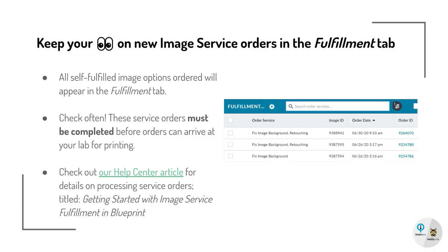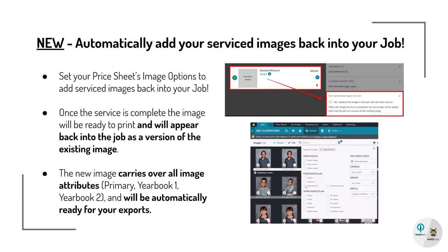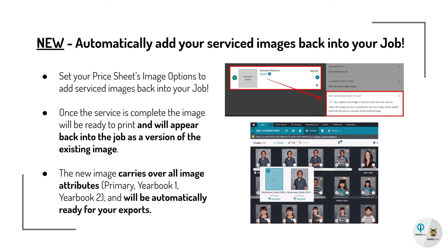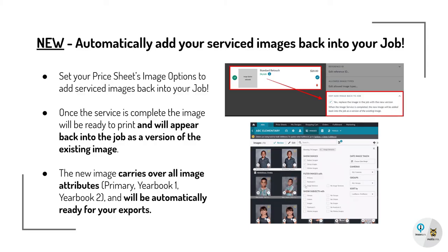Be sure to check often as these service orders must be completed before orders can arrive at your lab for printing. You can always check out our Help Center article for details on processing service orders titled 'Getting Started with Image Service Fulfillment in Blueprint.' There's a pretty sweet video that goes through the entire process. And as a new feature in Blueprint, you can now automatically add your serviced images back into your job — set your price sheet's image options to enable this.